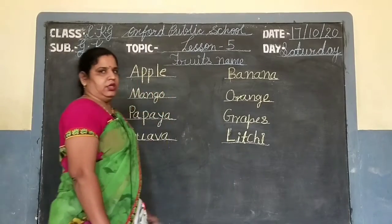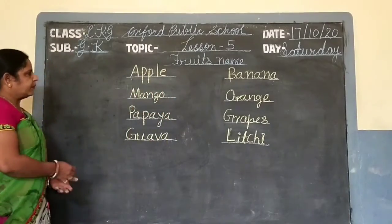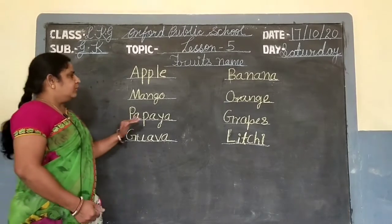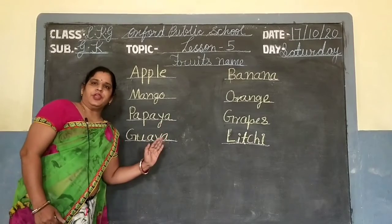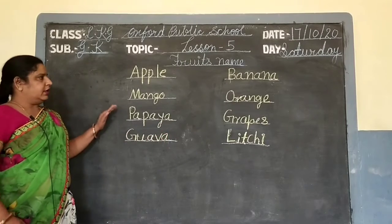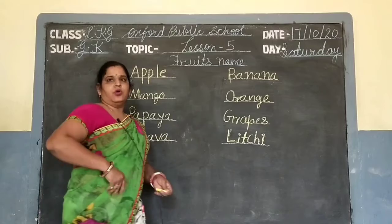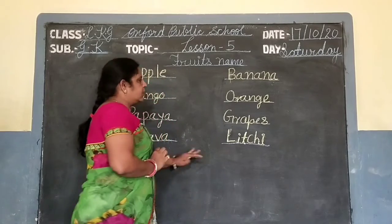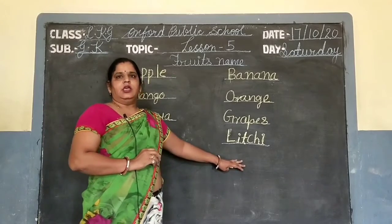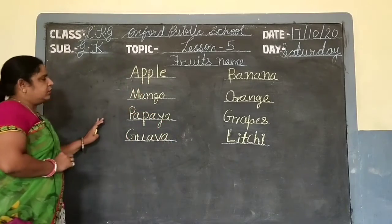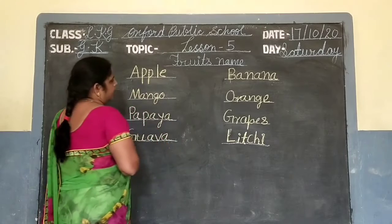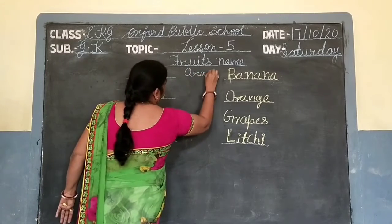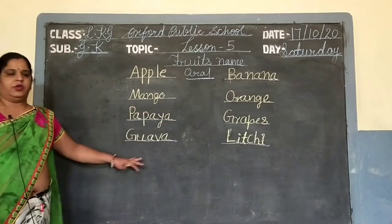फिर से एक-एक बार repeat हो गया। अब आप मुझे इसकी वीडियो send करोगे। जो learn करके oral करना है आपको। ये 8 fruits के names सभी बच्चों को आने चाहिए। O-R-A-L — oral है। Okay?